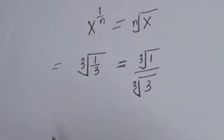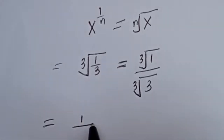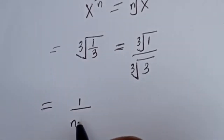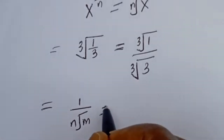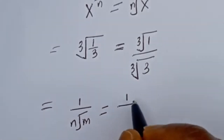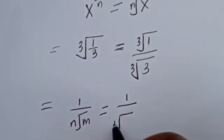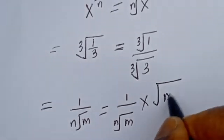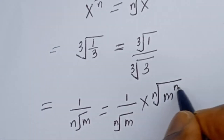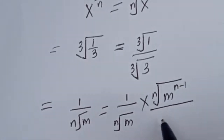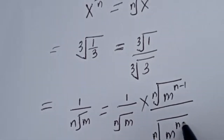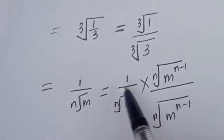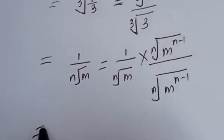Then take note of this: if you have 1 over the n-th root of m, this is equal to 1 over the n-th root of m, multiplied by the n-th root of m to the power of n minus 1, divided by the n-th root of m to the power of n minus 1.